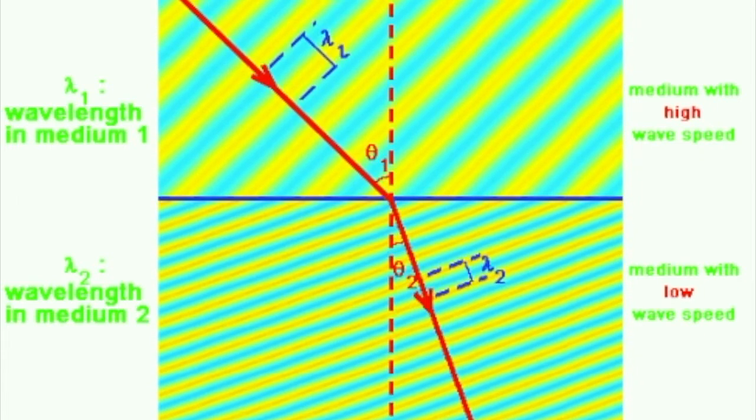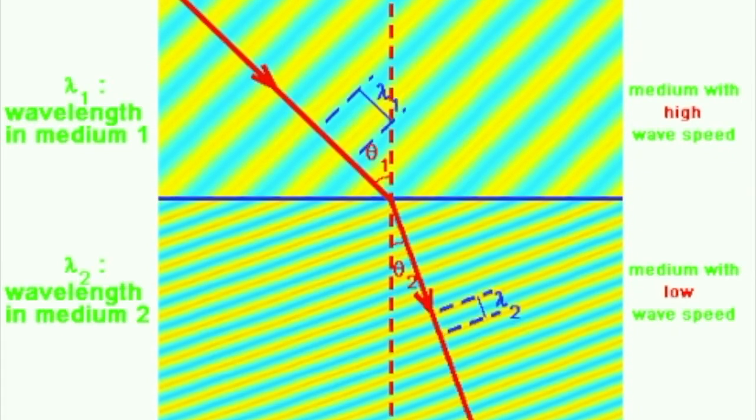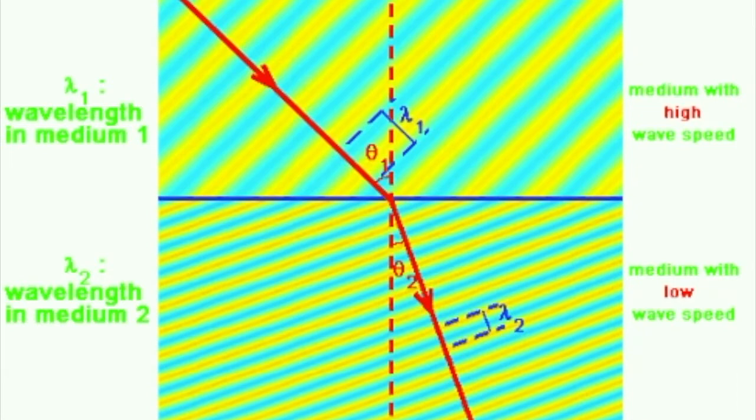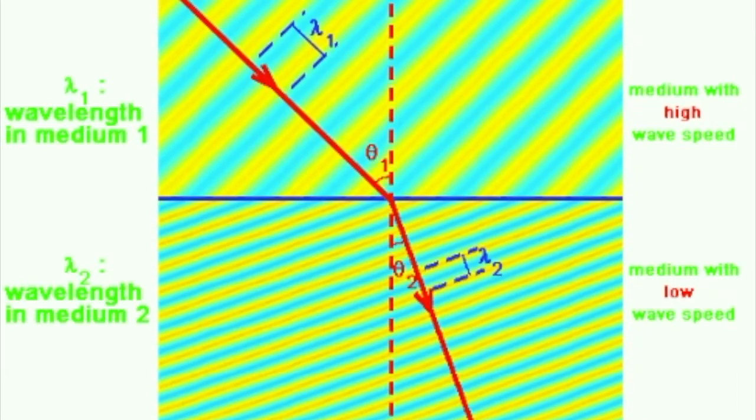Now, when the wave crosses the barrier, the crest crosses as a crest, the trough crosses as a trough. So the period of the wave stays the same. If the wave speed changes, that means that the wavelength has to change.